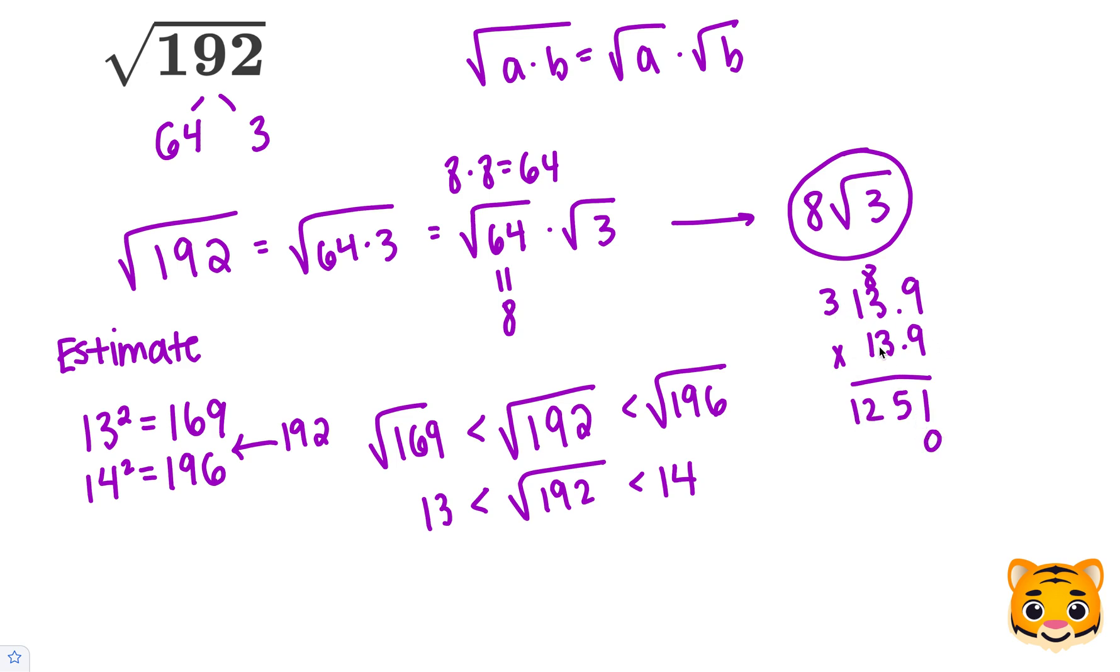Now we'll add a 0 and do the same thing. 3 times 9 is 27. Carry the 2. 3 times 3 is 9, plus 2 is 11. And 1 times 3 is 3, plus 1 is 4. Now we'll add two 0's and then multiply by 1. 1 times 9 is 9, 1 times 3 is 3, and 1 times 1 is 1.